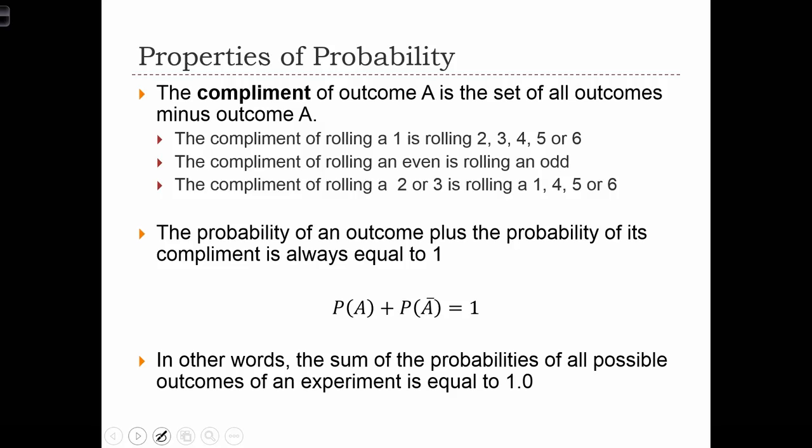The complement of rolling an even is the remainder of all the different outcomes after we remove the even ones. So it's the same thing as rolling an odd. Or the complement of rolling a two or three is equal to the set of all outcomes after removing two and three, one, four, five, and six.